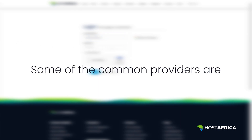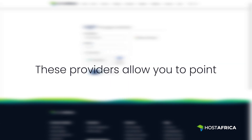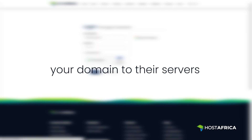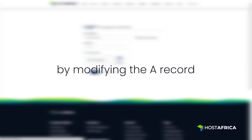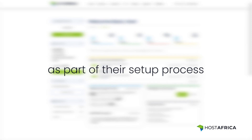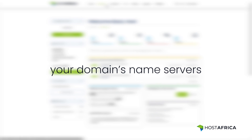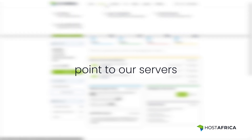Some of the common providers are Wix, Squarespace, Shopify, Weebly, Webflow, and so on. These providers allow you to point your domain to their servers by modifying the A record. These vendors will provide the necessary IP address as part of their setup process. Before we start, make sure that your domain's name servers point to our servers.